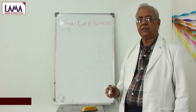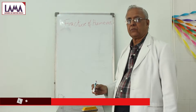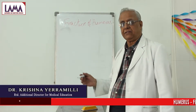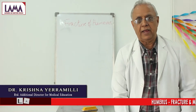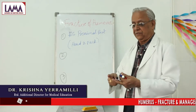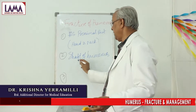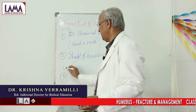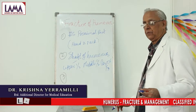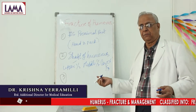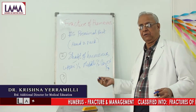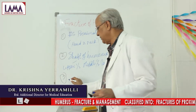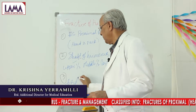Fracture of the humerus, the upper arm bone. Fractures of the humerus are usually considered as fractures of the proximal end, fractures of the shaft, and fractures of the lower end. The shaft is further divided into upper one-third, middle one-third, and lower one-third, because each has its own problems. Finally, there are fractures of the distal end.